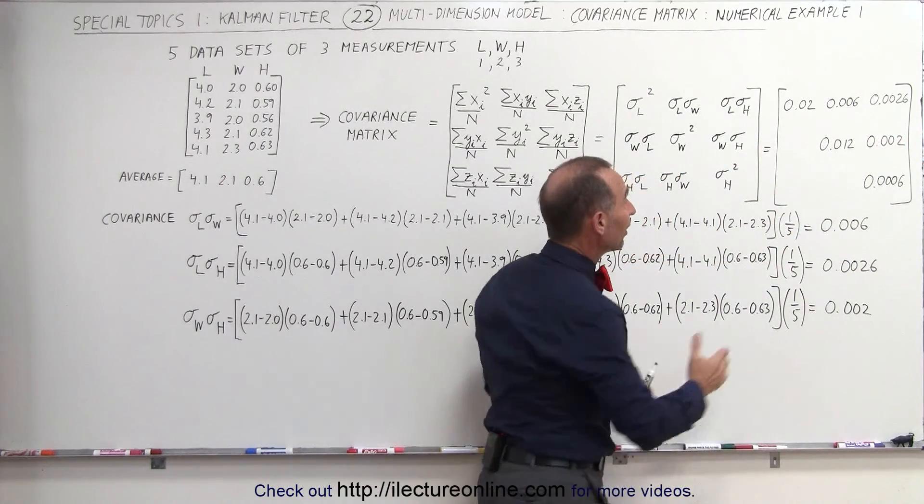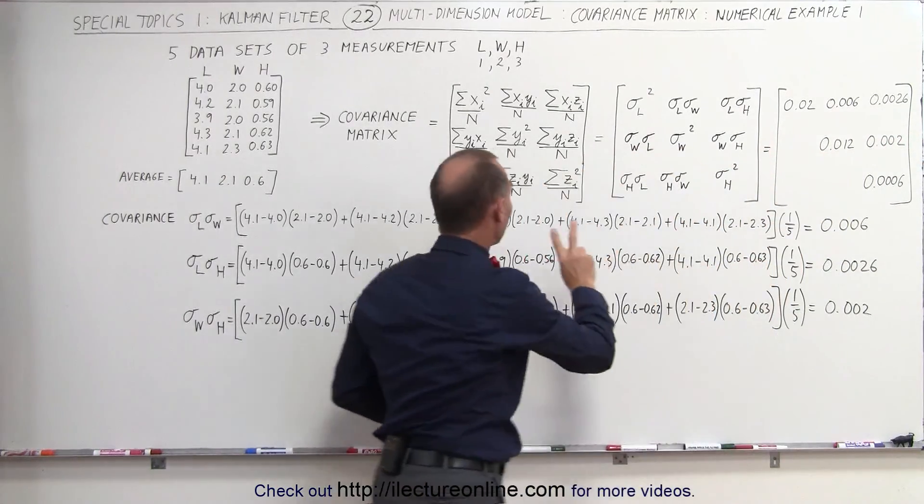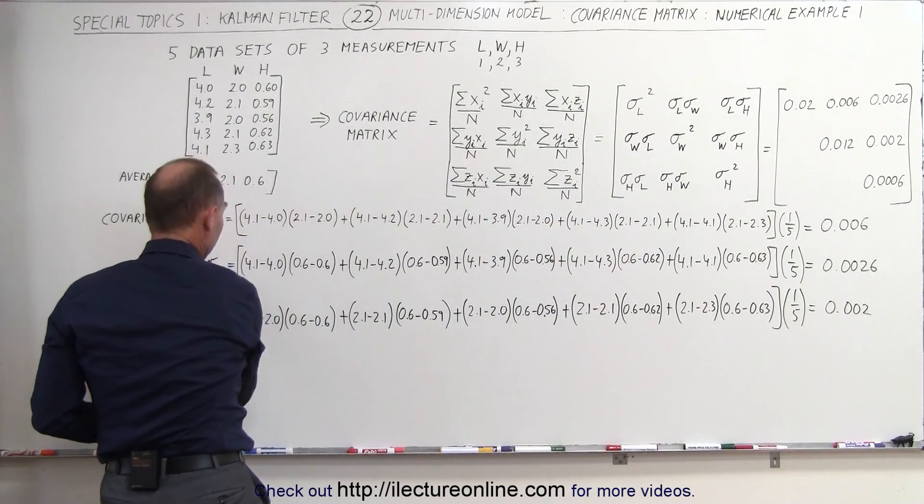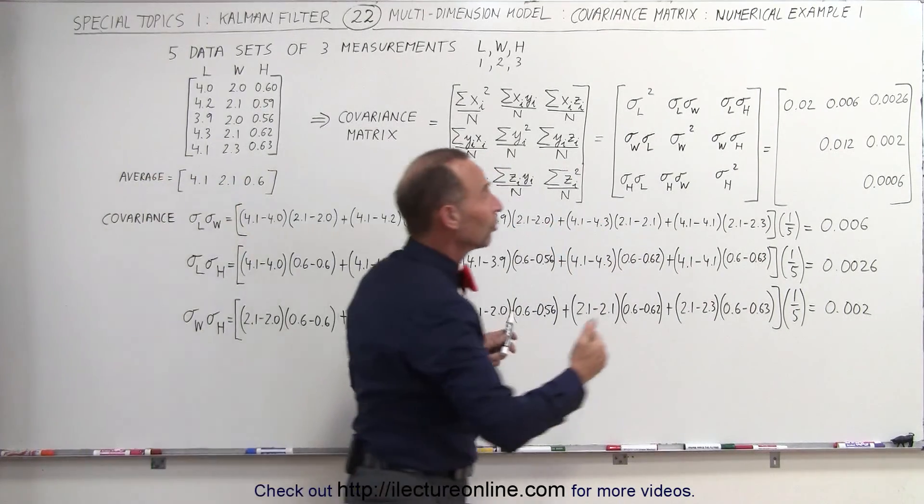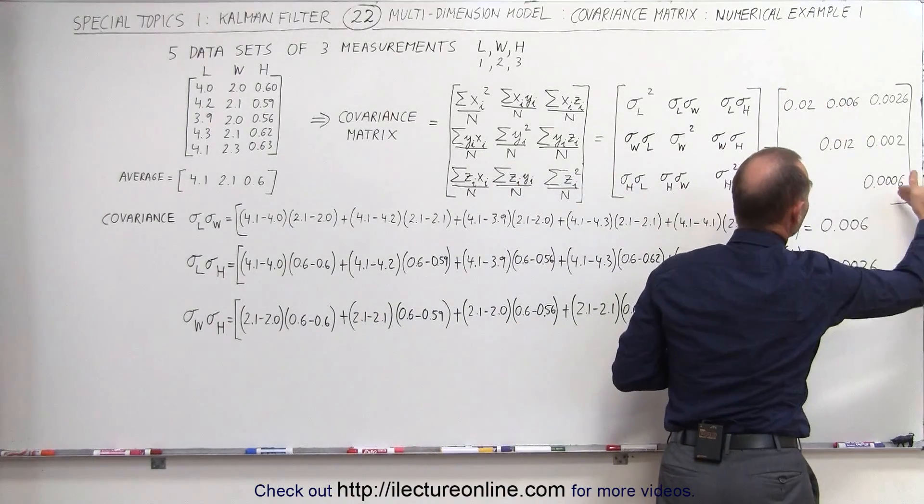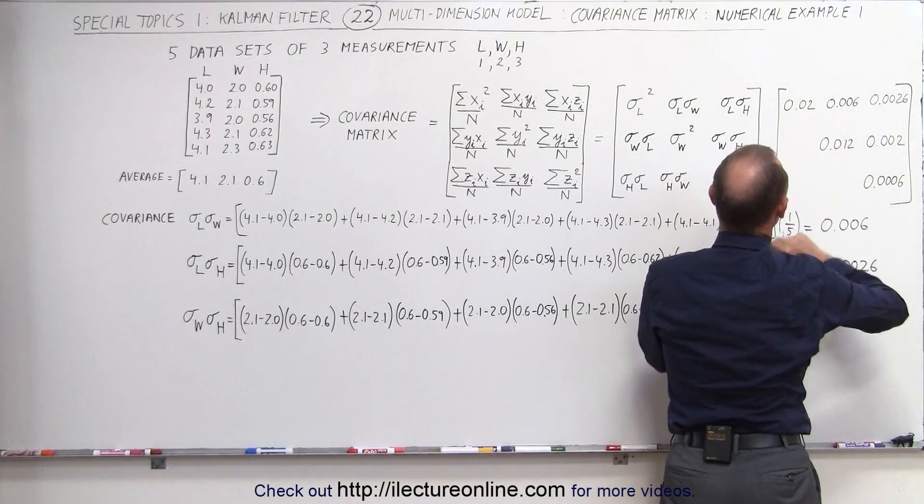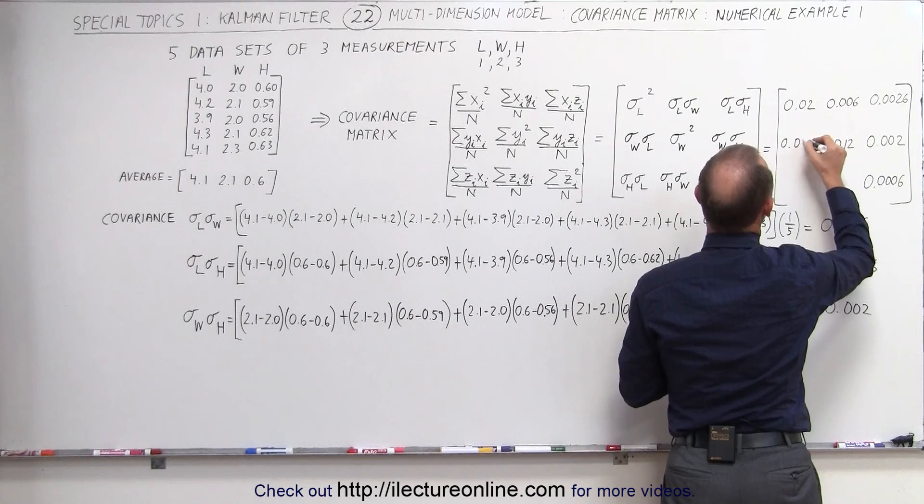Now what about the other elements on this side? Well, it simply would reverse the order like this, but we would get the exact same value. So there's kind of a mirror image across the diagonal. So this element right here would also be 0.006.